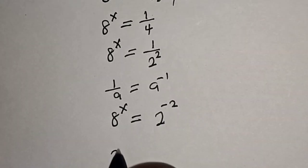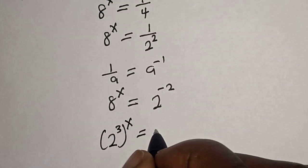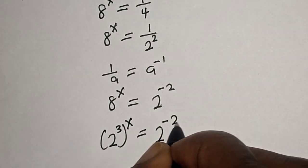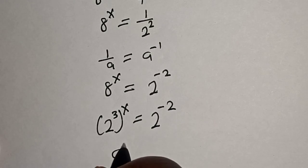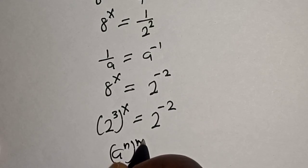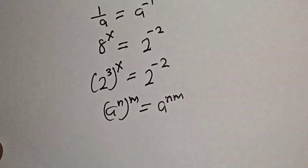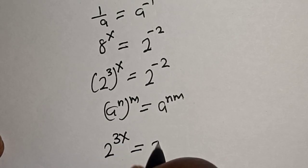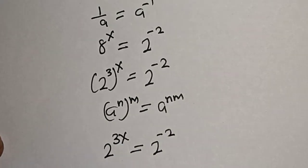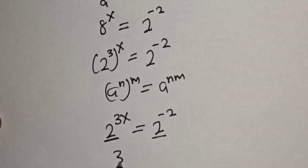Now 8 raised to power s can be written as 2 raised to power 3, raised to power s, equals 2 raised to power minus 2. Using the exponential rule that a raised to power n raised to power m equals a raised to power n times m, we get 2 raised to power 3s equals 2 raised to power minus 2. Since they have the same base, 3s equals minus 2.